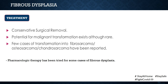Treatment of fibrous dysplasia is based on the stage of disease. Some lesions grow slowly until bone growth ceases at skeletal maturity, and some may even regress on their own. Treatment is generally conservative and requires surgical removal for aesthetic purposes. It should also be noted that fibrous dysplasia can show malignant transformation, though such instances are rare. Cases of fibrosarcoma, osteosarcoma, or chondrosarcoma have been reported in cases of pre-existing fibrous dysplasia.